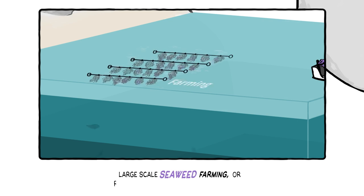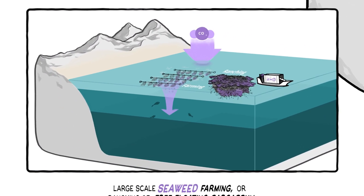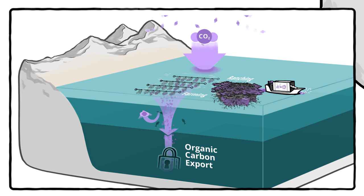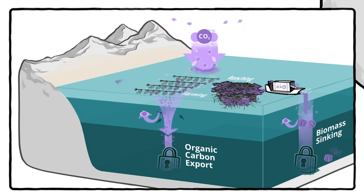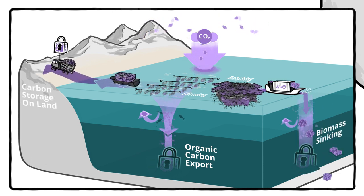For example, large-scale seaweed farming or ranching of free-floating sargassum can remove the carbon stored in plant biomass by sinking it to the ocean floor or by locking it up in long-lived bioproducts.